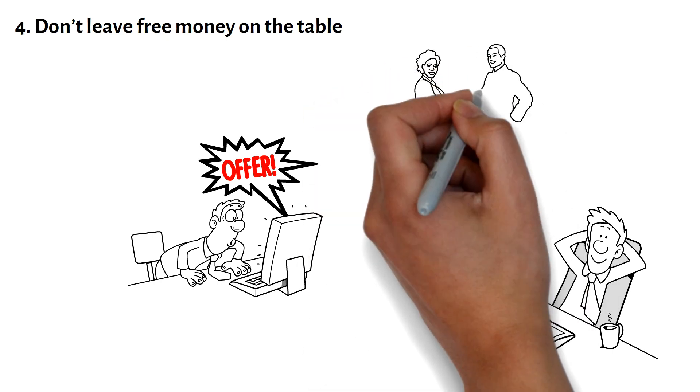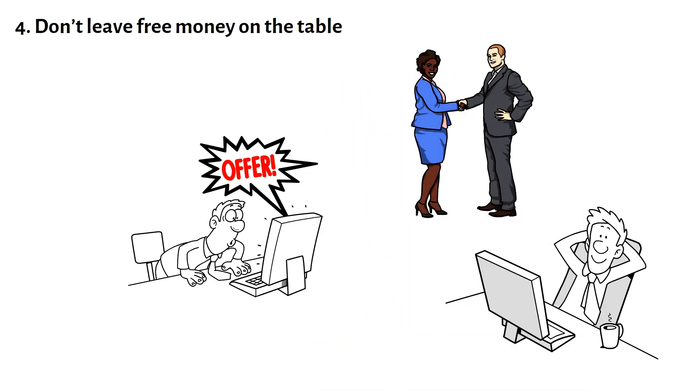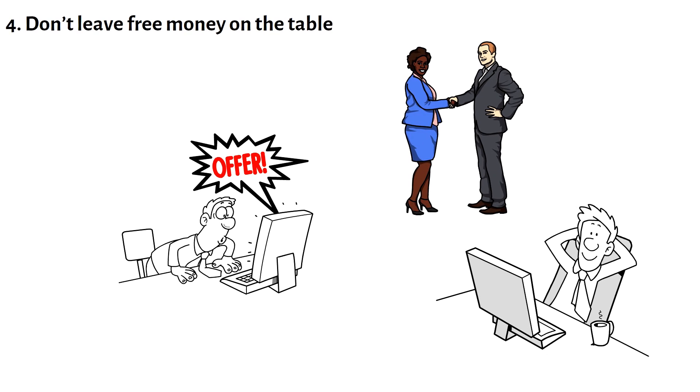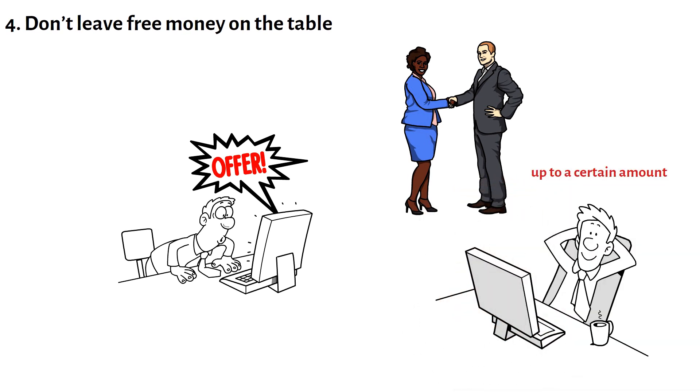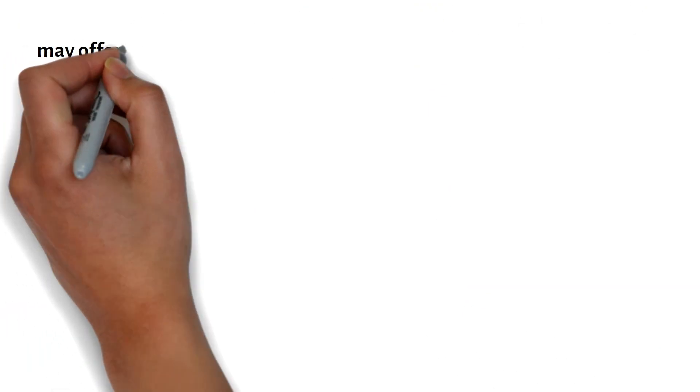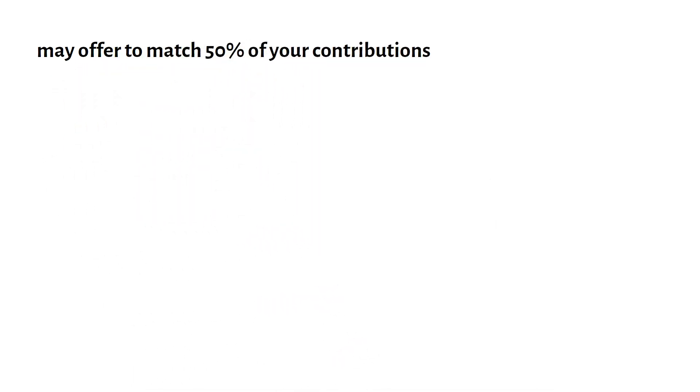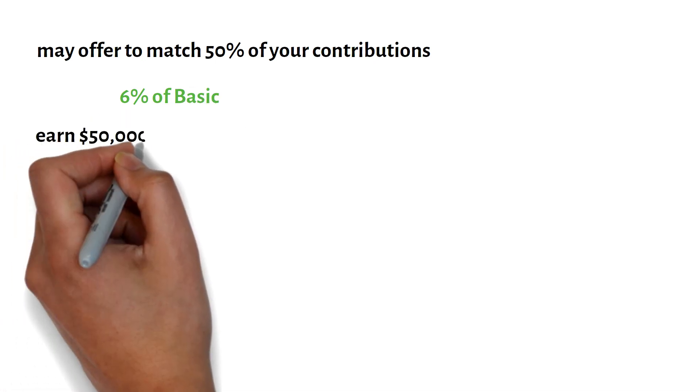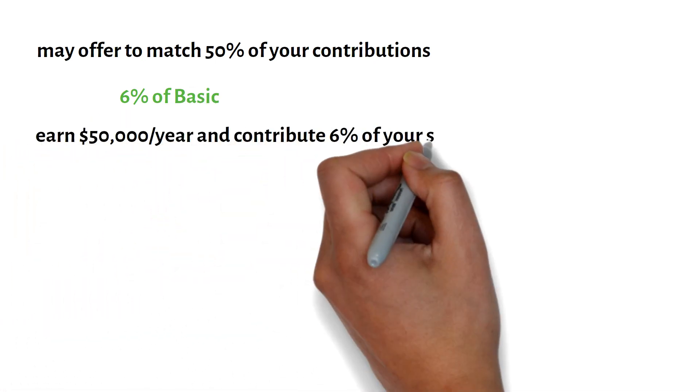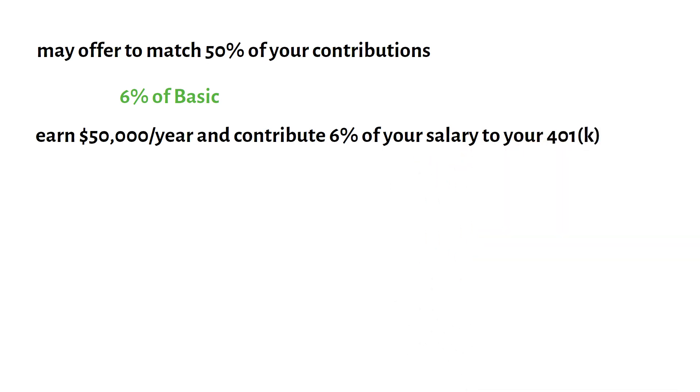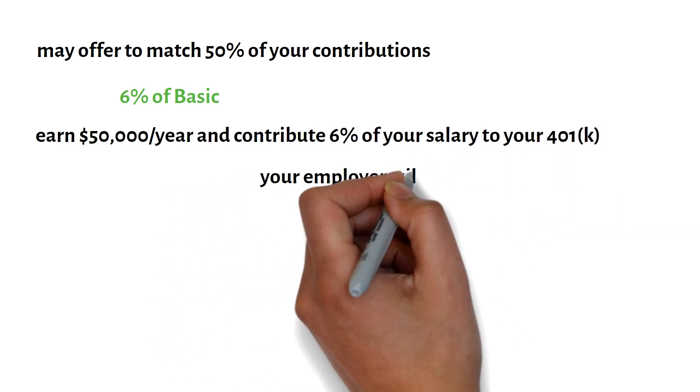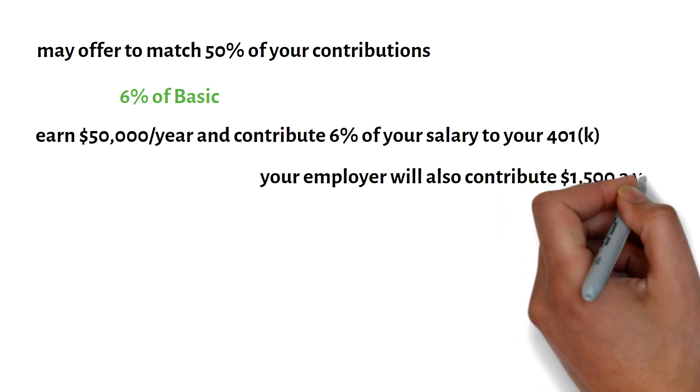Here's how it works. Your employer offers to match a percentage of your contributions to your 401k plan, up to a certain amount. For example, your employer may offer to match 50% of your contributions up to 6% of your salary. So if you earn $50,000 a year and contribute 6% of your salary to your 401k, or $3,000 a year, your employer will also contribute $1,500 a year.